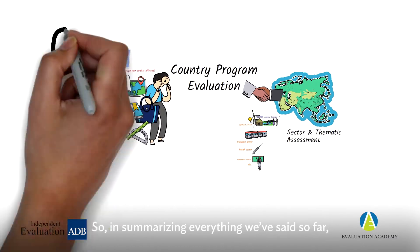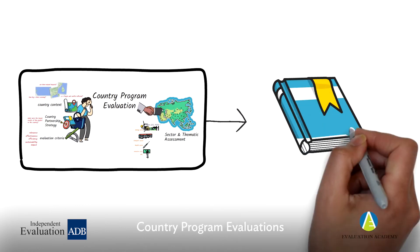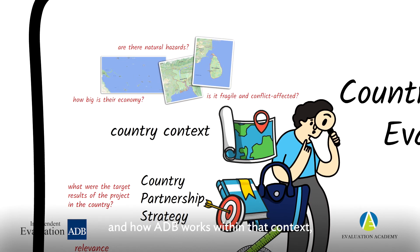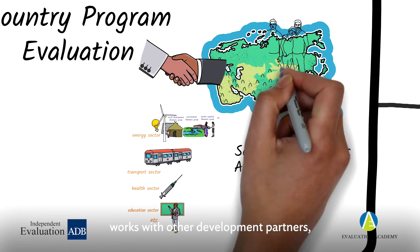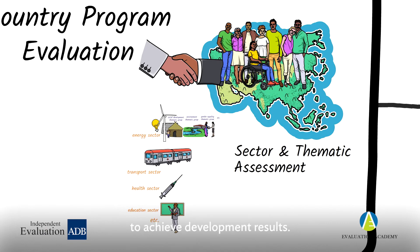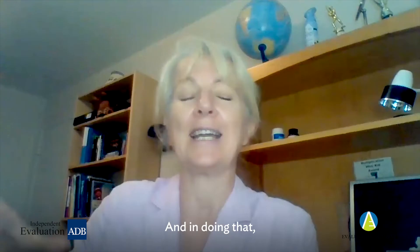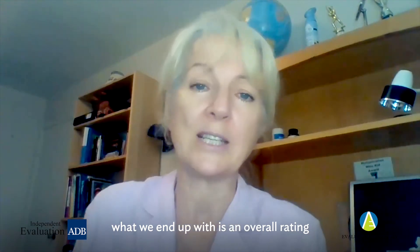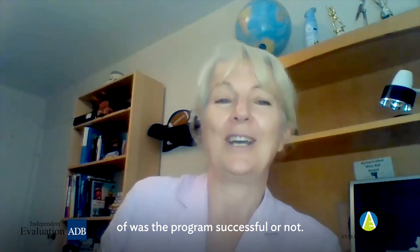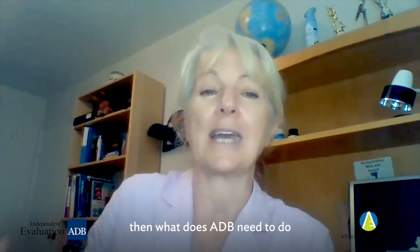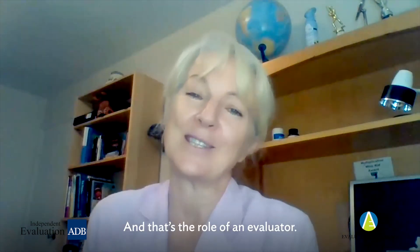In summary, it's very important that we do country programme evaluations so that we can inform future ADB strategies and improve development results. We assess the country context and how ADB works within that context — with other development partners, with civil society, and in the private sector. We look at how ADB works with government in the sectors to improve service delivery, and then look across sectors at thematic objectives like helping to improve people's lives. What we end up with is an overall rating of whether the programme was successful or not, why it was successful, what worked, what didn't work, and if it wasn't successful, what ADB needs to do differently in the future. That's the role of an evaluator.